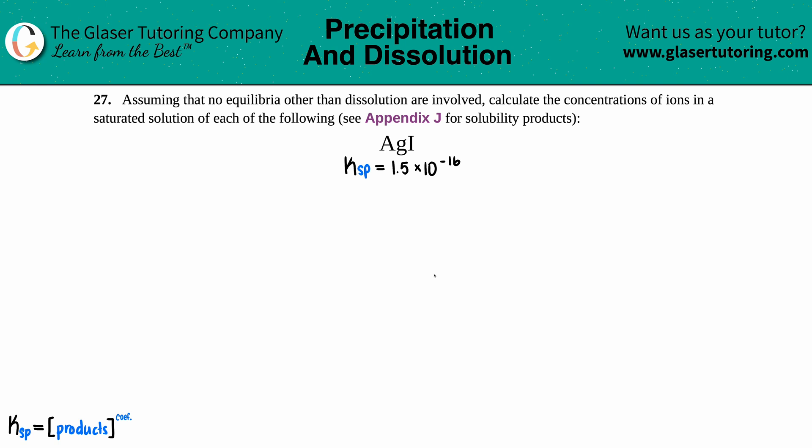Number 27: Assuming that no equilibria other than dissolution are involved, calculate the concentration of ions in a saturated solution of each of the following. See Appendix J for solubility products, which is exactly what I did. The question asks for the concentrations of the ions in AgI (silver iodide). I had to go to the back of the textbook to find that the solubility product Ksp is 1.5 × 10⁻¹⁶.